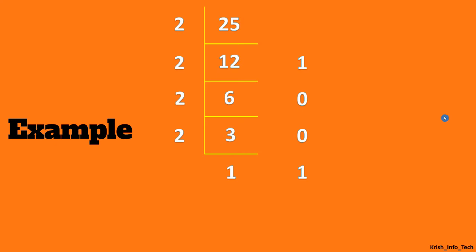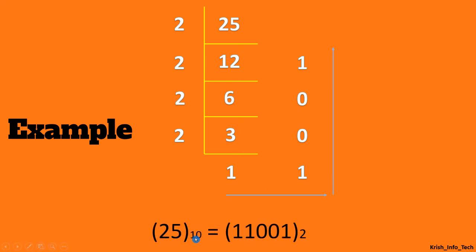Now, how do we write the binary value? The binary values will have only 0 and 1, and if you check the remainders, they have only 0 and 1. Start writing from the bottom and go to the top. So the decimal value 25 in base 10 has the equivalent binary value of 1, 1, 0, 0, 1 in base 2. Remember not to forget to write the base value when doing conversion — for decimal values, we do not write the base value.